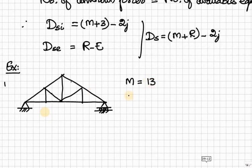Number of joints J is equal to 8, counting 1 through 8. Number of reactions R: for hinge support, we have 2 and for roller support, we have 1. Therefore, 2 plus 1 is equal to 3.